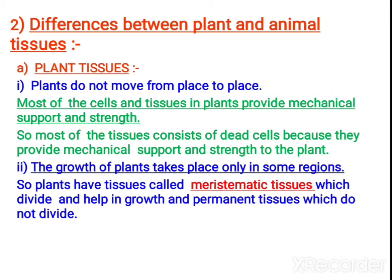When you observe plants, are they able to move from place to place? No, plants are not able to move — they are static. Plants are very big and they have to stand and withstand wind. In the case of terrestrial plants, and in aquatic plants they have to withstand water current. So they need mechanical strength, which they get by means of these tissues. Most of the cells in plants are dead cells, and these dead cells provide mechanical support and strength to the plant.